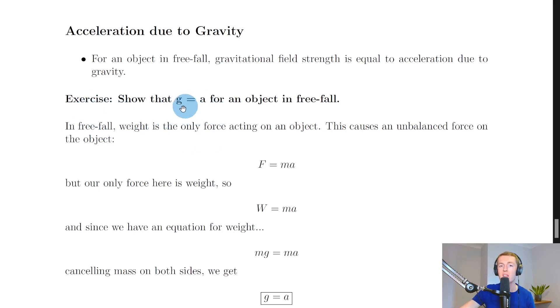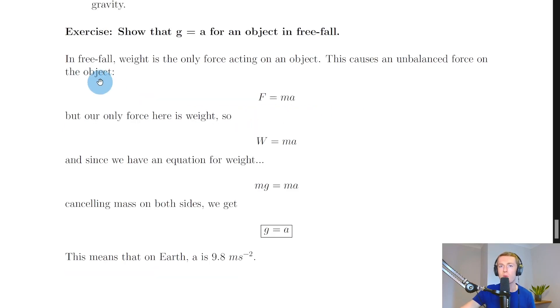It says show that g equals a, i.e. the gravitational field strength is equal to acceleration due to gravity for an object in free fall. In free fall, weight is the only force acting on an object. This causes an unbalanced force on the object, so we can say that F equals ma from Newton's second law.